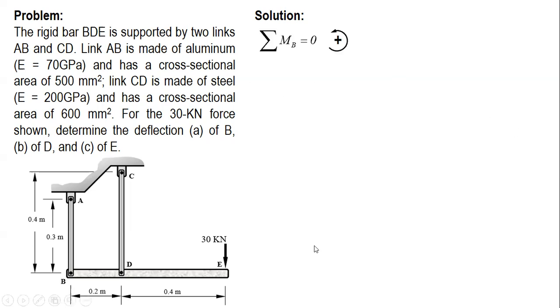What we'll do is determine the forces of links AB and CD. So first we will sum up moment about B. Since the moment of 30 kilonewtons is clockwise, this must be countered by a counterclockwise moment.